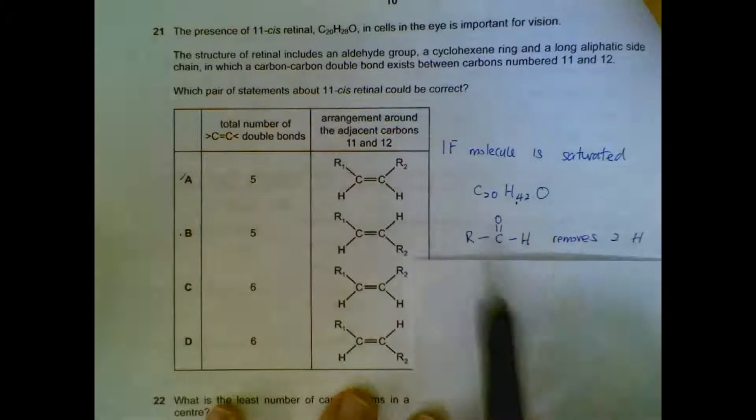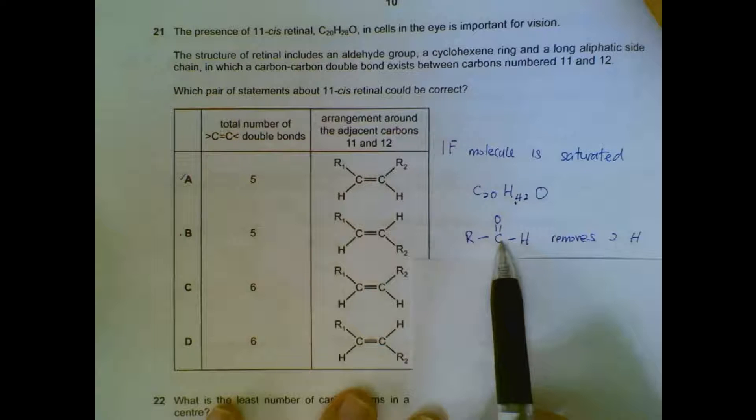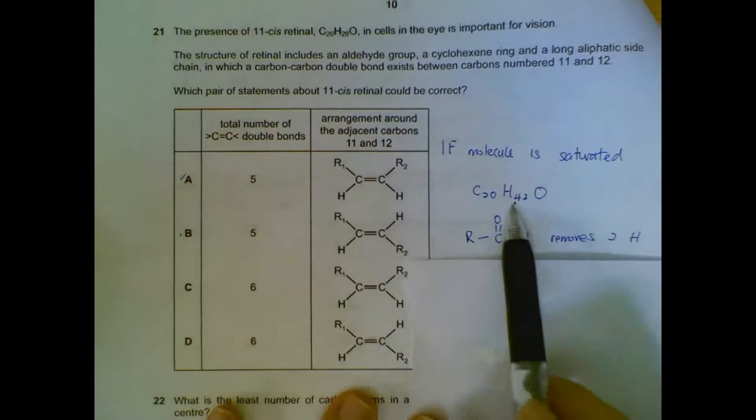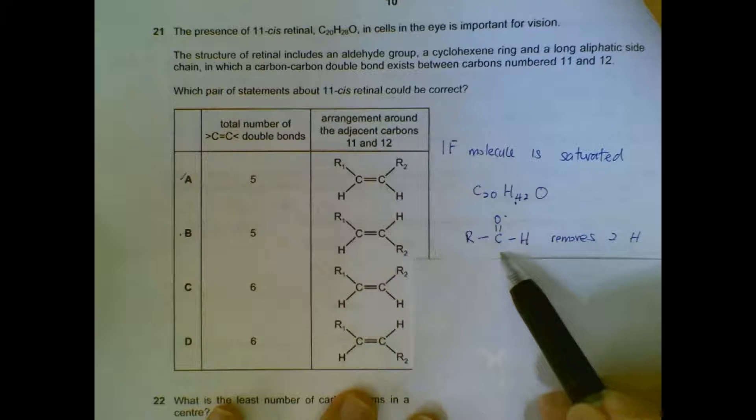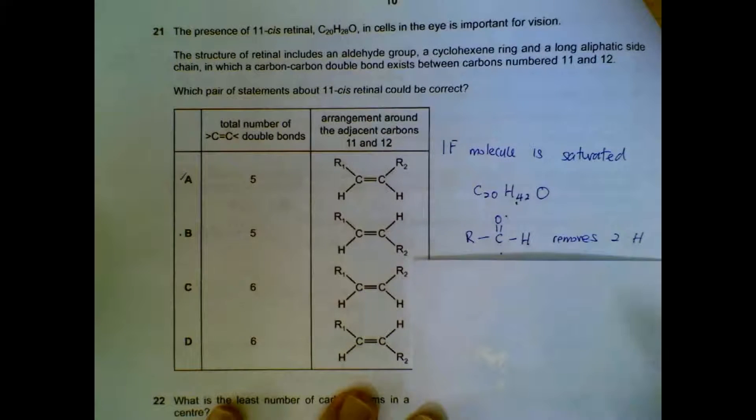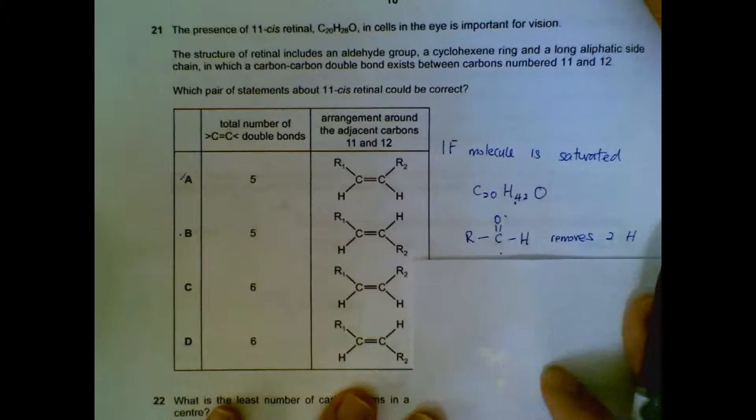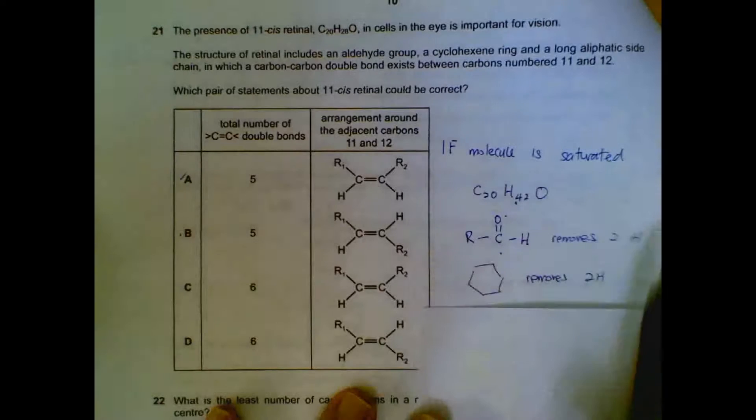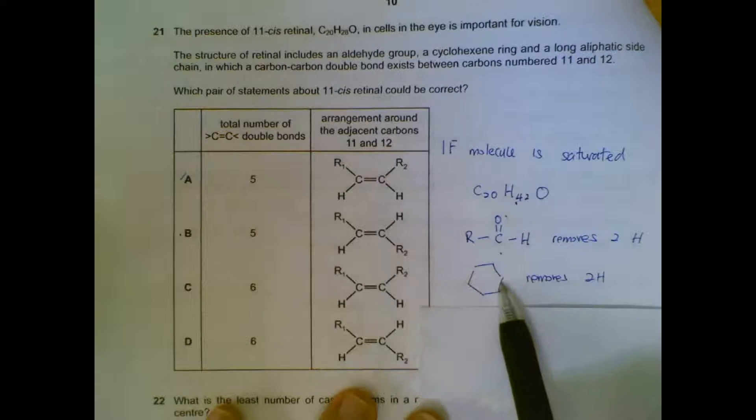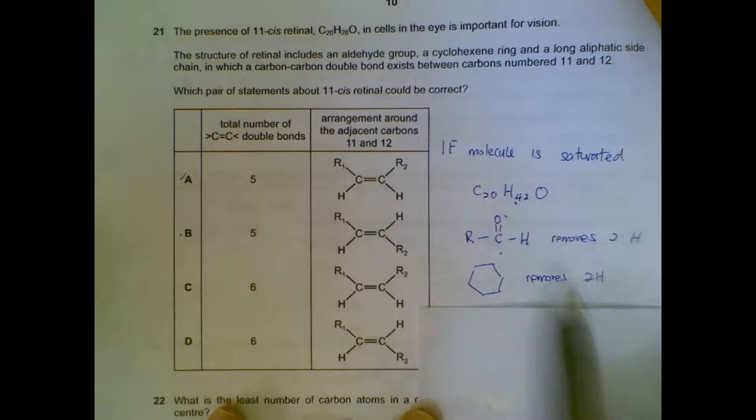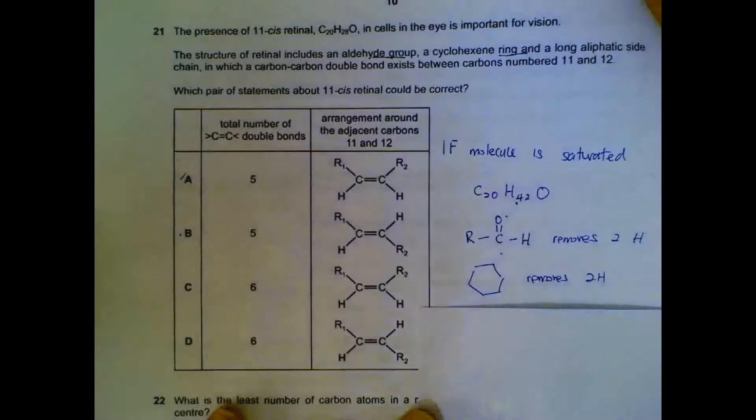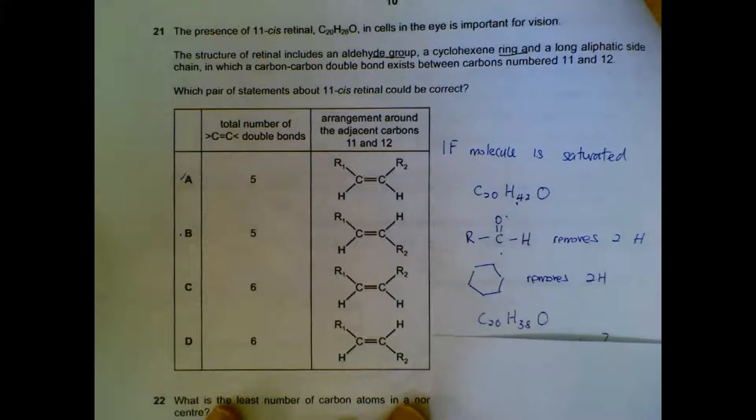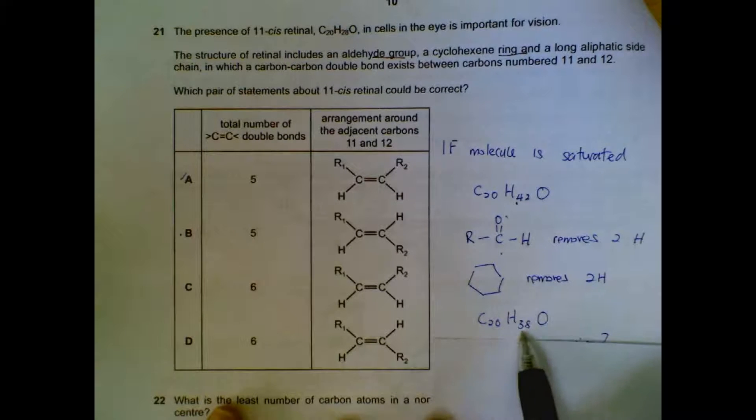And then we are told that it contains an aldehyde group. If it contains an aldehyde group like this, then we will only have 2 hydrogen less than original, because you can see that the carbon instead of 1 hydrogen here and 1 hydrogen here, 2 hydrogens have to be removed. So aldehyde group removes 2 hydrogen. A ring, if we form a ring, it actually means we can put 2 hydrogen less or so. So aldehyde group removes 2 hydrogen, a ring removes 2 hydrogen. Then we end up with C20H38O.